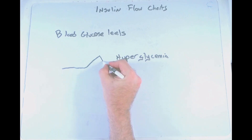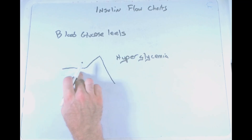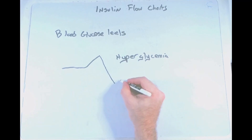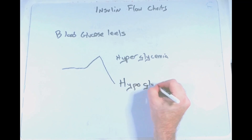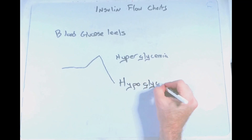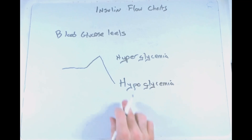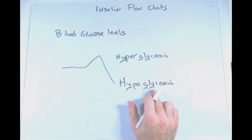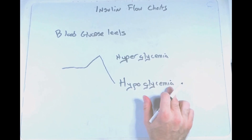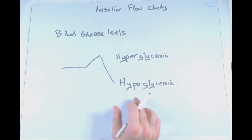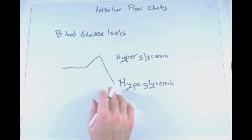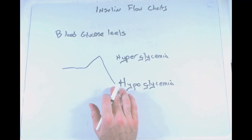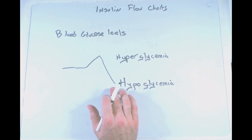Or blood glucose could drop, and if we drop down below that set point, we're going to be in a situation of hypoglycemia — 'hypo' for lower, 'glyco' for sugar, 'emia' for blood — so we're looking at a situation where the body has too little glucose within the blood.